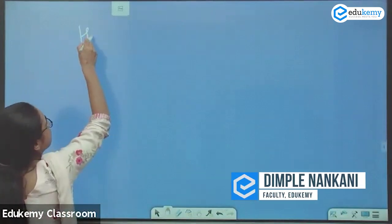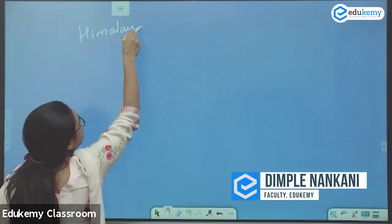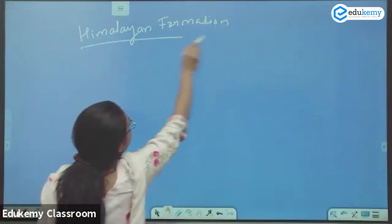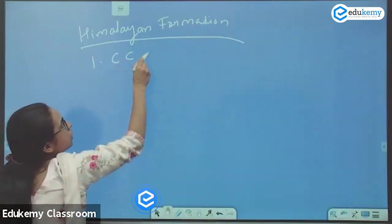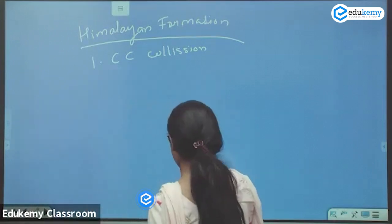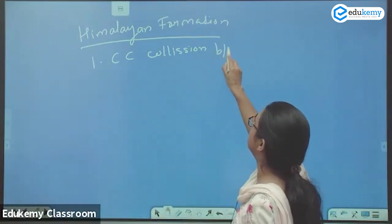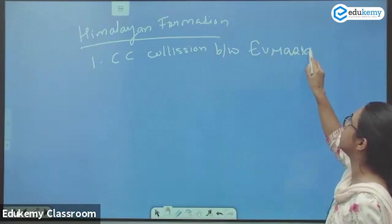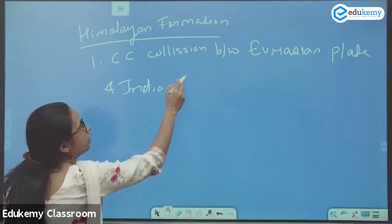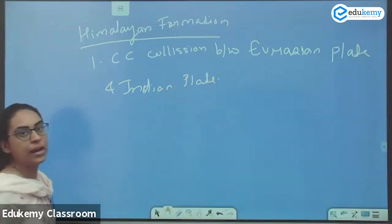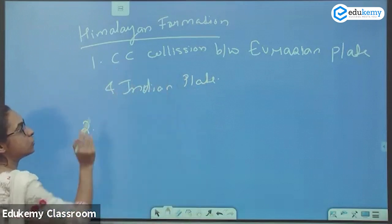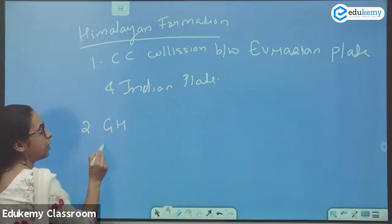How is the Himalayas formation? The Himalayas is formed because of the continent-continent (CC) collision between the Eurasian plate and the Indian plate. They both collided and led to the upliftment of the Himalayas. There are three important ranges: the Great Himalayas and the Middle Himalayas.